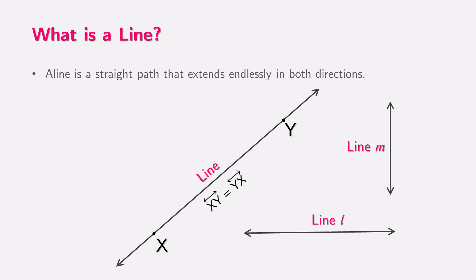Now here's something cool. Since a line goes on forever, we can't actually draw the entire thing. To represent its endless nature, we use arrows at both ends. For example, the line passing through points X and Y can be written as XY with a double arrow above it. And sometimes, we use small letters like L or M to name the line. Isn't it fascinating how something can go on forever in geometry?